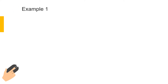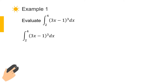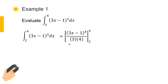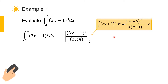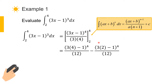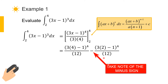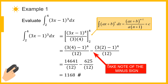Let's look at the first example: evaluating the definite integral of the composite function (3x minus 1) to the power of 3 from x equal 2 to x equal 4. The integral of the function is evaluated using the integration rule for composite functions. Substituting the upper limit 4 and the lower limit 2 into the expression, the value of the definite integral is 1168.